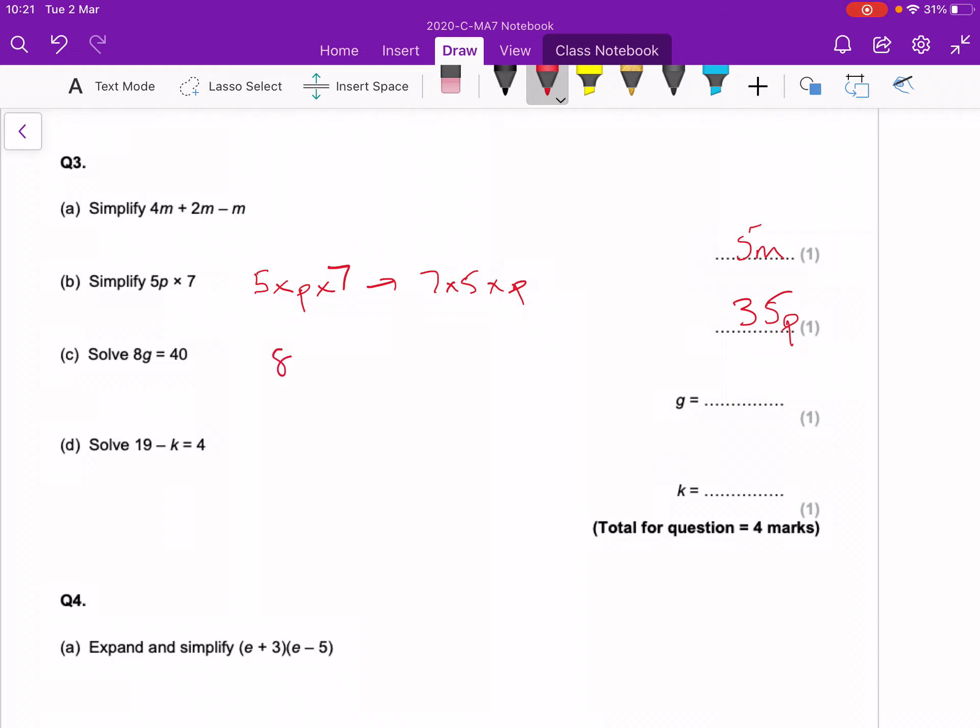Solve this. So 8 times g equals 40. We want the g by itself, so I divide by 8 on this side to get rid of this 8, and you're left with g, and I divide by 8 on that side. 40 divided by 8 means that g has to be equal to 5.